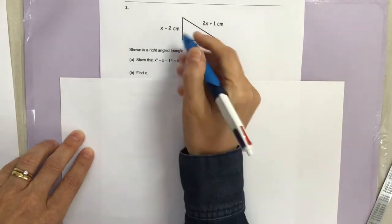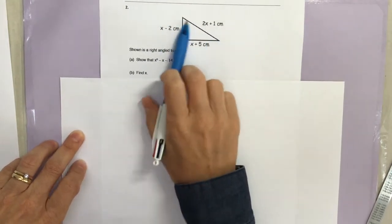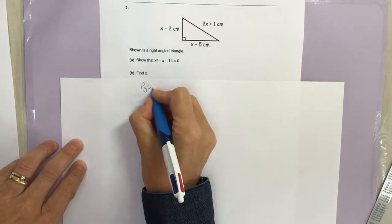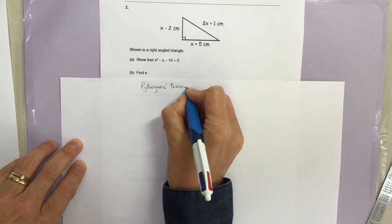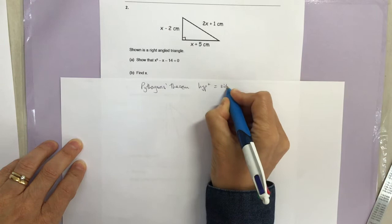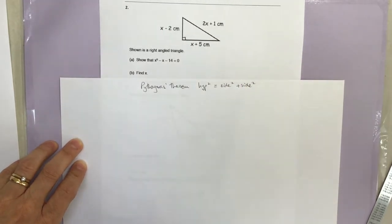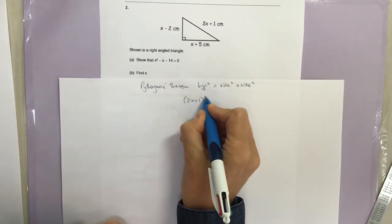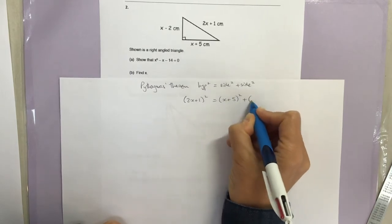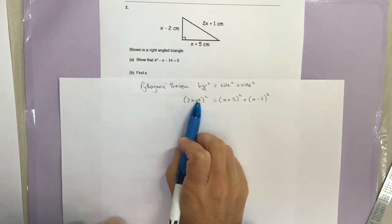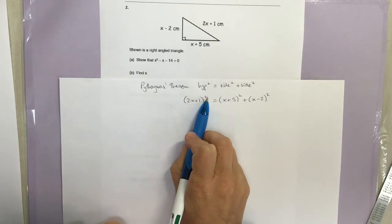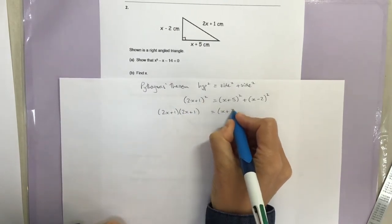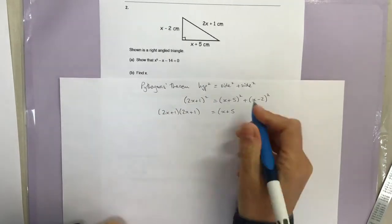For part (a), it's a right-angle triangle with three lengths expressed in terms of x. I can use Pythagoras's theorem: hypotenuse squared equals the sum of the other two sides squared. The hypotenuse expression squared equals the other two expressions squared and added together. Remember this doesn't mean 2x² + 1² — it means the full bracket (2x + 1) all squared. You may want to do each FOIL expansion separately before combining.